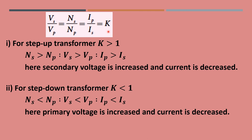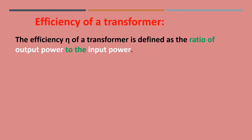For a step-down transformer, k is less than 1, meaning Vs is less than Vp, Ns is less than Np, and Ip is less than Is. Here the primary voltage is greater than the secondary voltage, but the primary current is less than the secondary current.